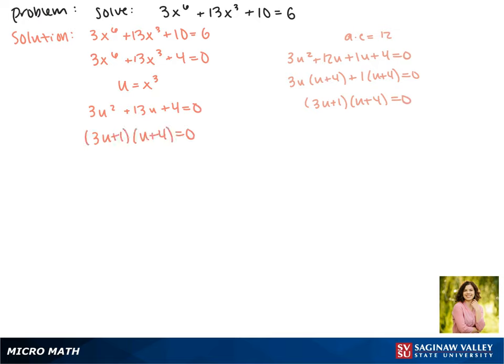So that's how our equation factors, and now we'll take turns setting each one equal to 0. So 3u plus 1 equals 0, or u plus 4 equals 0.